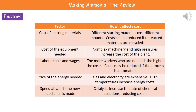The third factor is labor costs and wages. We need people to work in these factories — in some cases highly skilled scientists, which are obviously costly, and also lower skilled workers. The number of people we need determines how much it costs overall. We can reduce labor costs by using automation and machines to control systems.